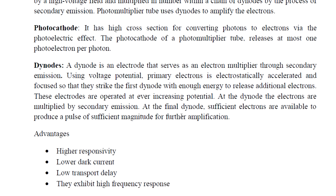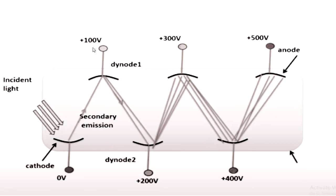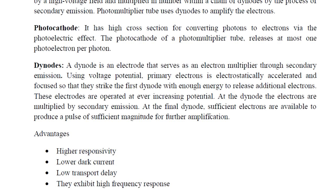A dynode is an electrode that serves as an electron multiplier through secondary emission. High-potential primary electrons are electrostatically accelerated and focused so they strike the first dynode with enough energy to release additional electrons. These electrodes are operated at ever-increasing potentials — for example, increasing at a rate of 100 volts, 200 volts, or 300 volts. At the dynode, the electrons are multiplied by secondary emission.